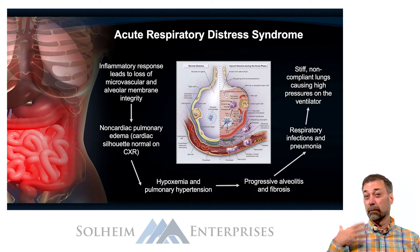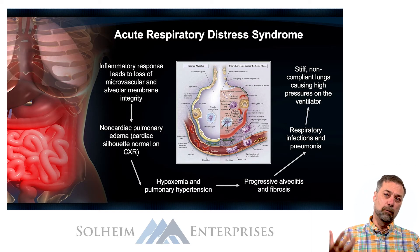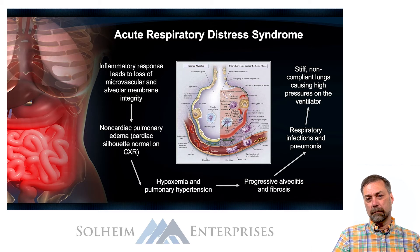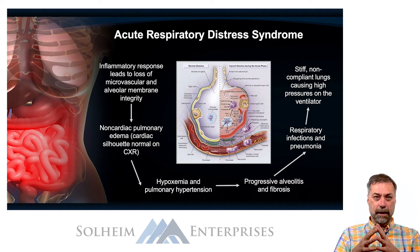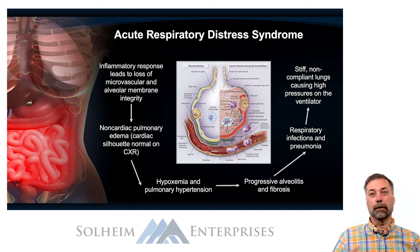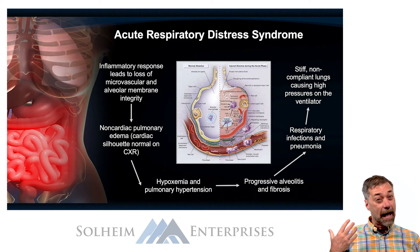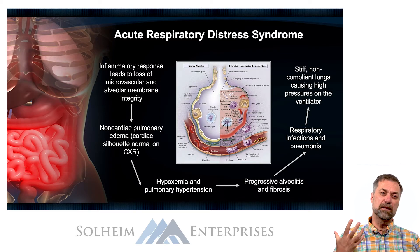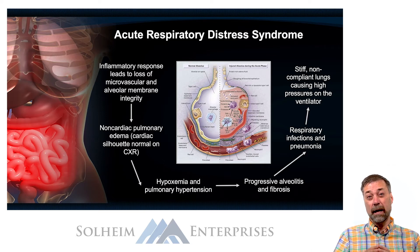Pulmonary hypertension reduces blood flow into the lungs, causing further injury and worsening of the patient's inflammatory response. That in turn leads to progressive alveolitis.